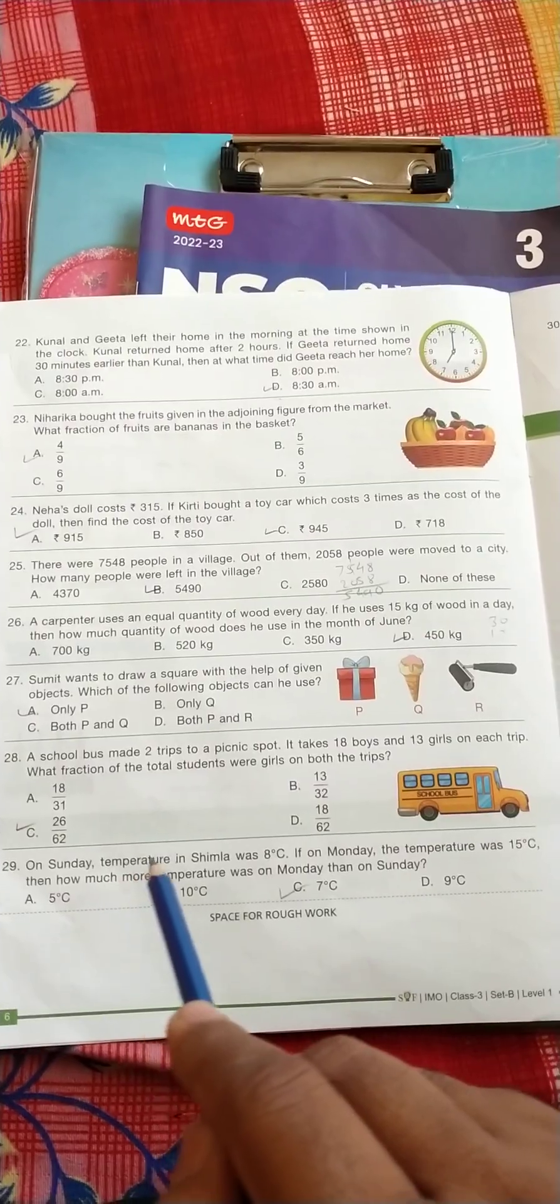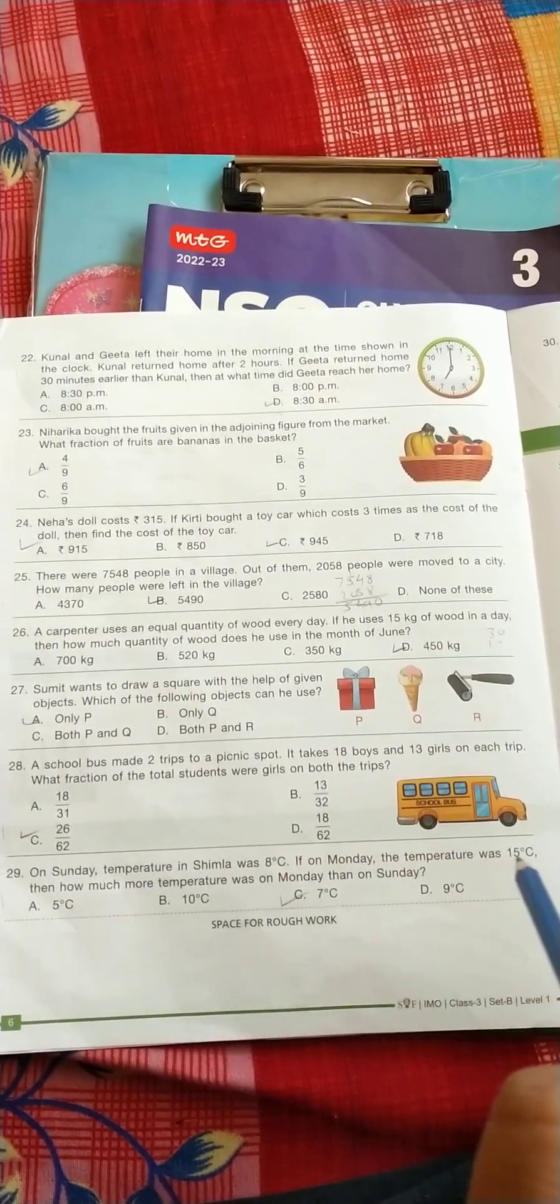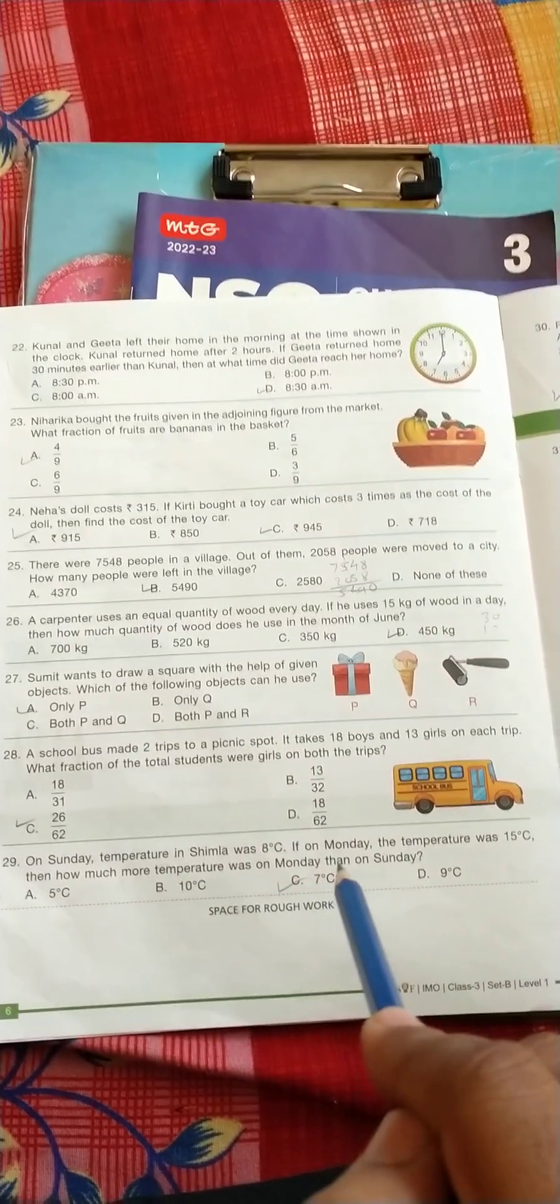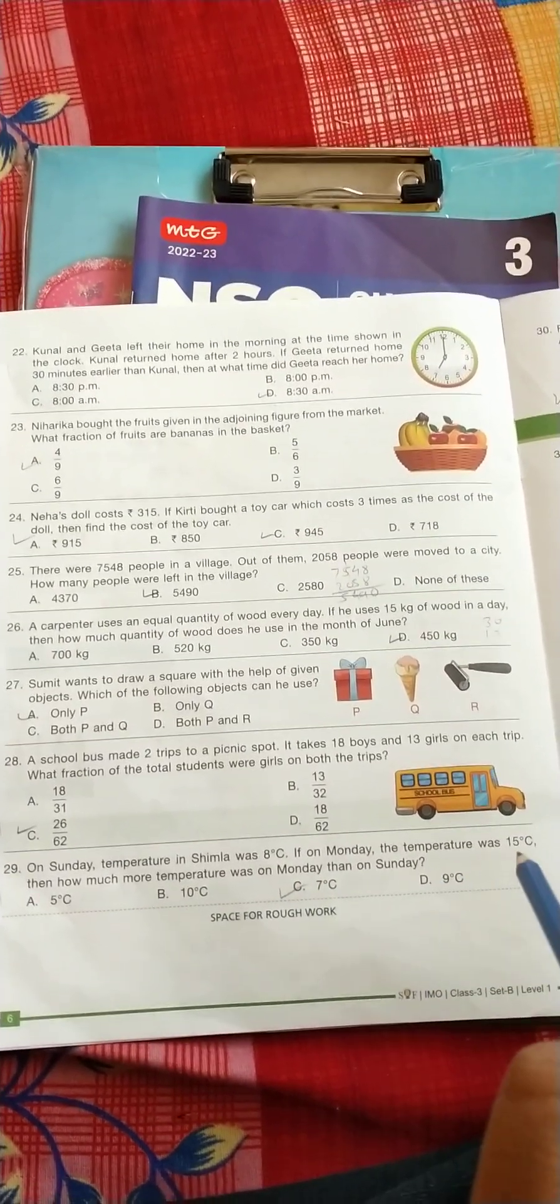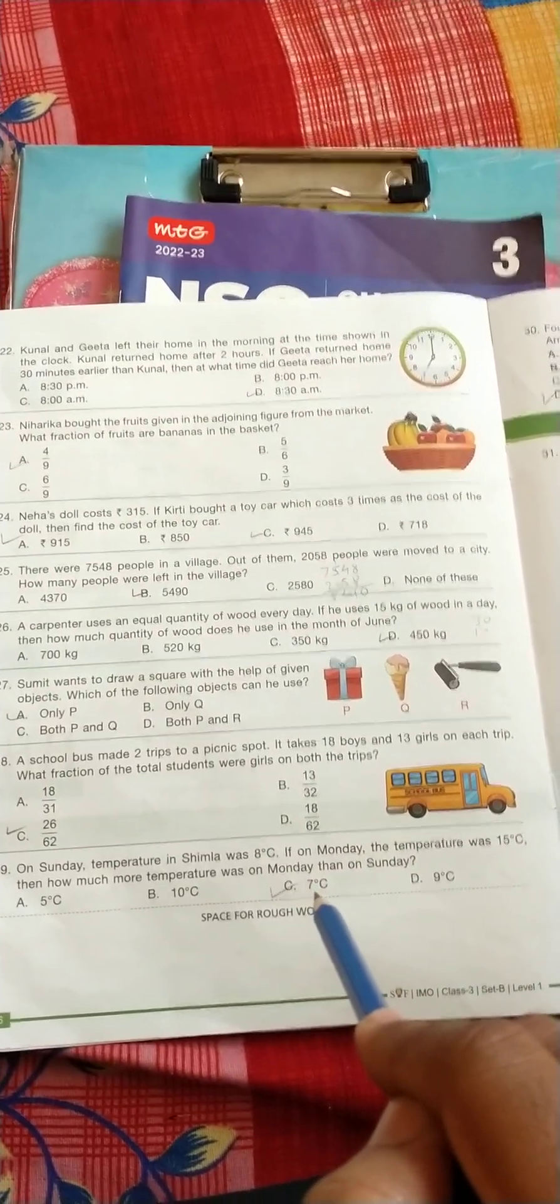On Sunday temperature in Shimla is 8 degree. If on Monday the temperature was 15 degree, then how much more temperature was on Monday than the Sunday? So it's simply subtraction, so the correct answer is C, 7 degree.